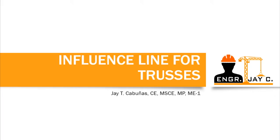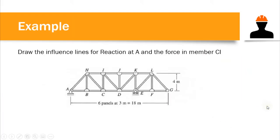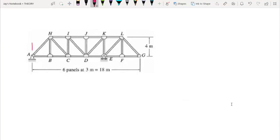For drawing the influence line of a truss, we will just need our basic knowledge in statics — equilibrium equations. Let's proceed to the example. We are asked to draw the influence lines for the reaction at A and the force in member CI. The first step is to place a one unit load at the leftmost point, which is x equal to zero, or at point A.